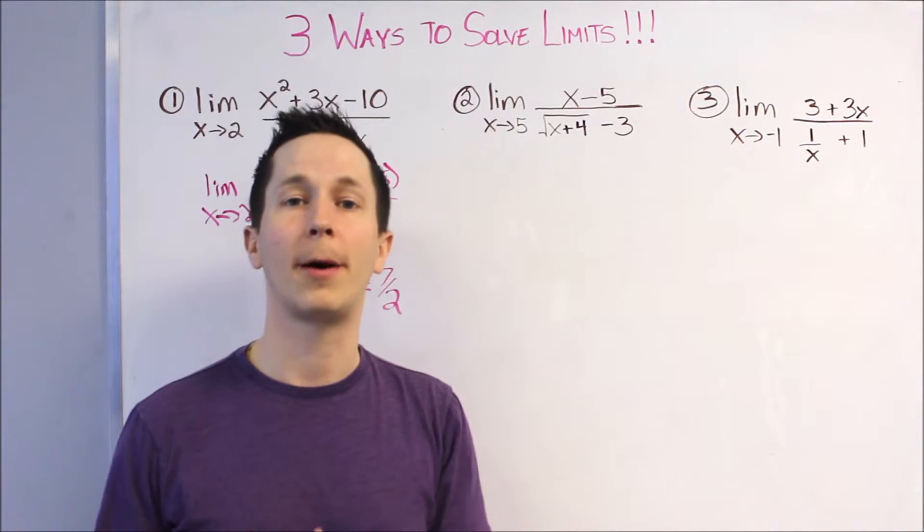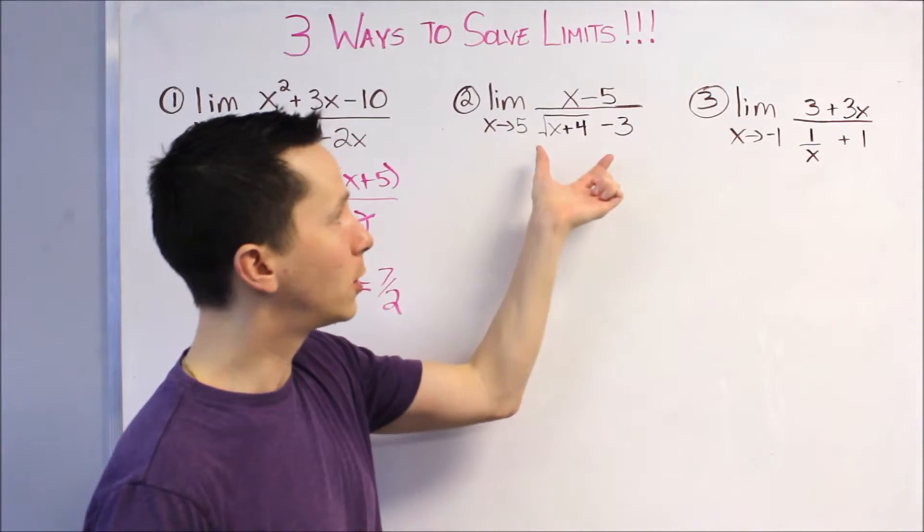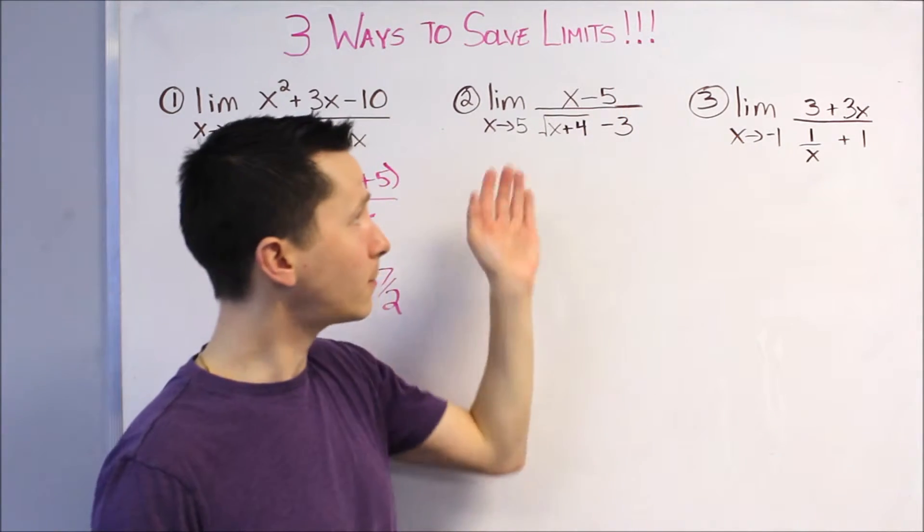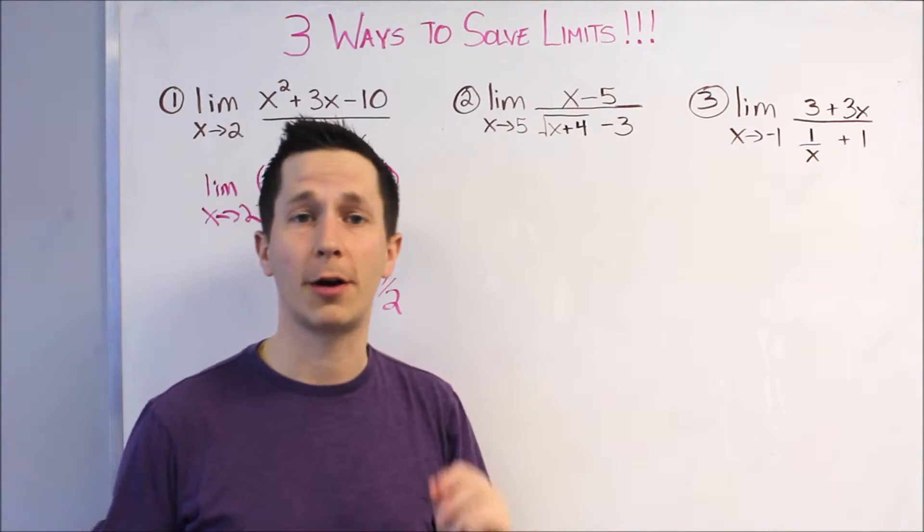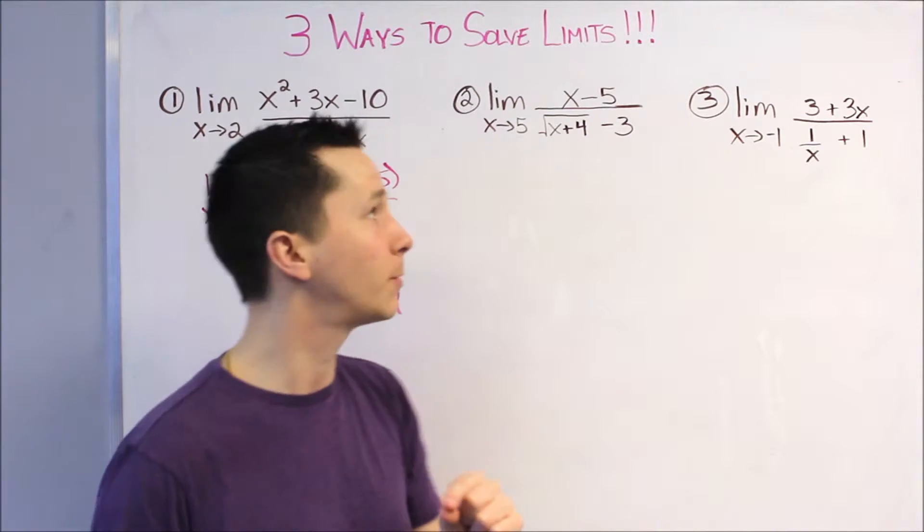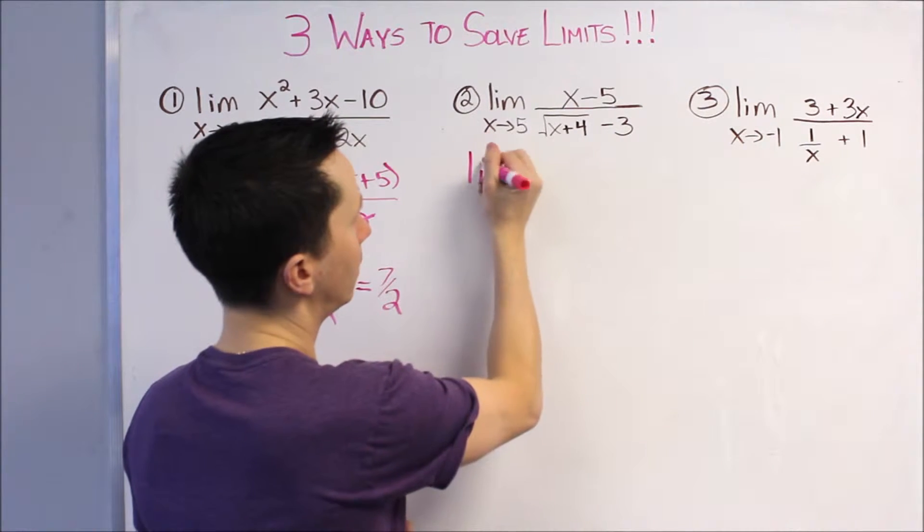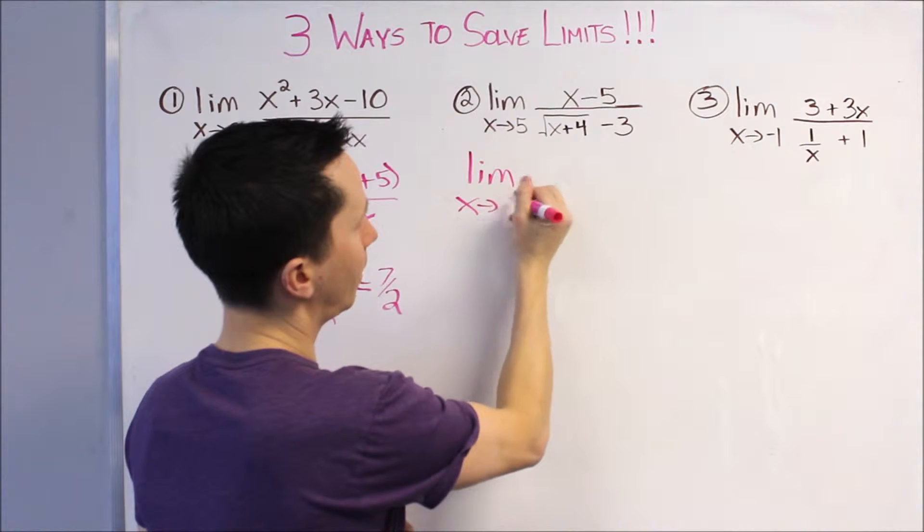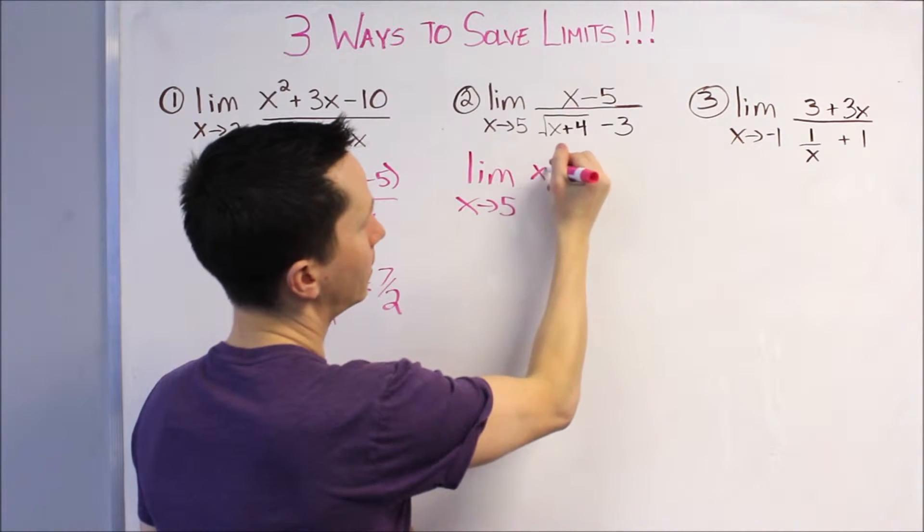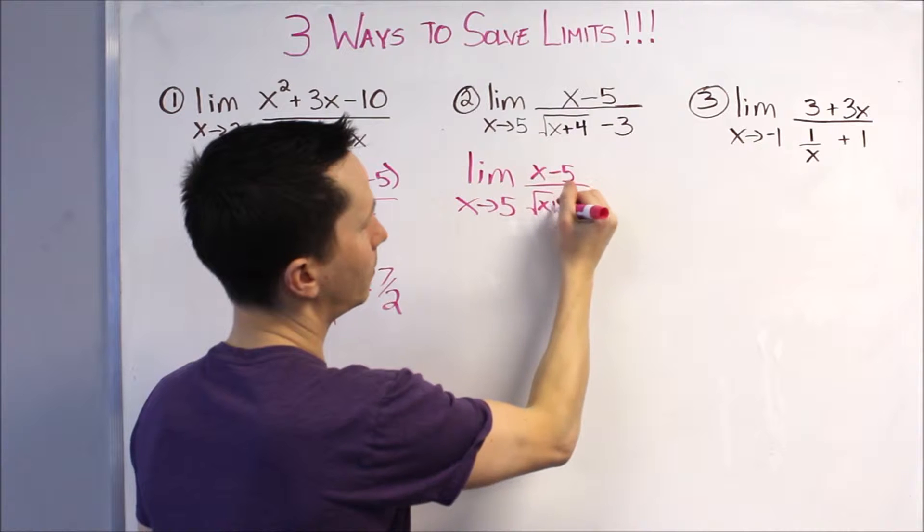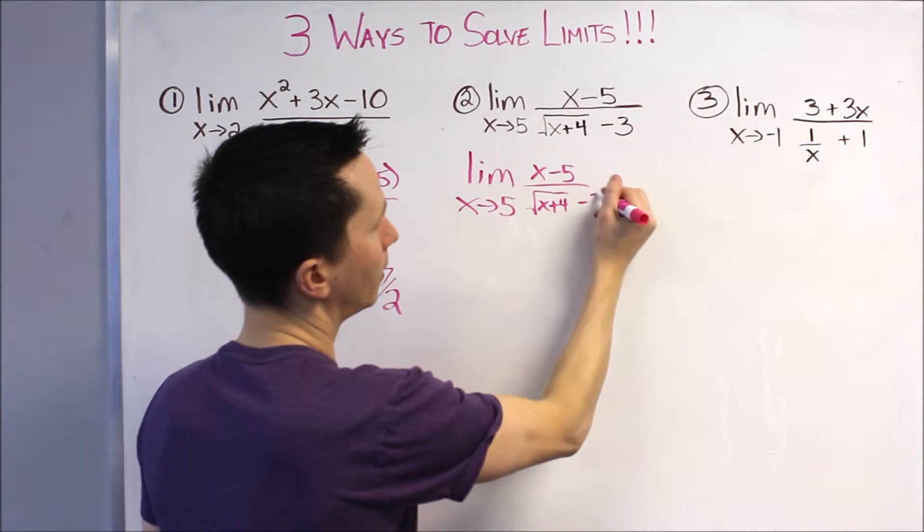So, I'm going to multiply by what's called the conjugate, which I'm going to multiply top and bottom, which you're allowed to do, by the exact same thing that's on the bottom, except I'm going to change the sign in between. So, it's going to look like this. I'm going to rewrite what we have. X goes to 5 of X minus 5 over the square root of X plus 4 minus 3.